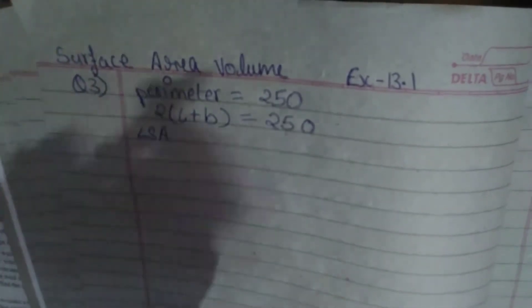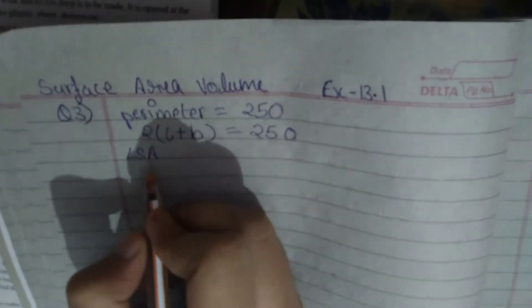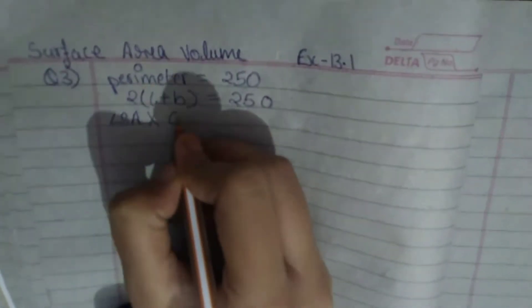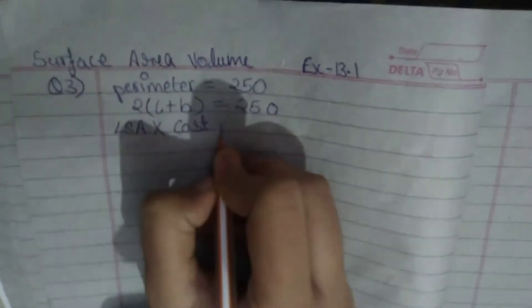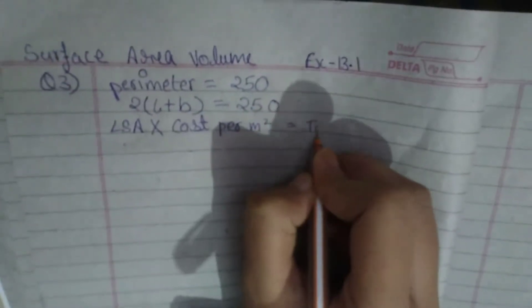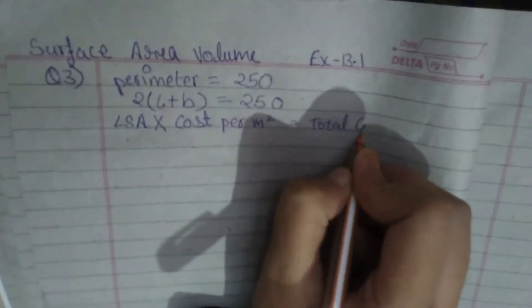When we have to find the lateral surface area, lateral surface area into cost per meter square is equal to total cost.